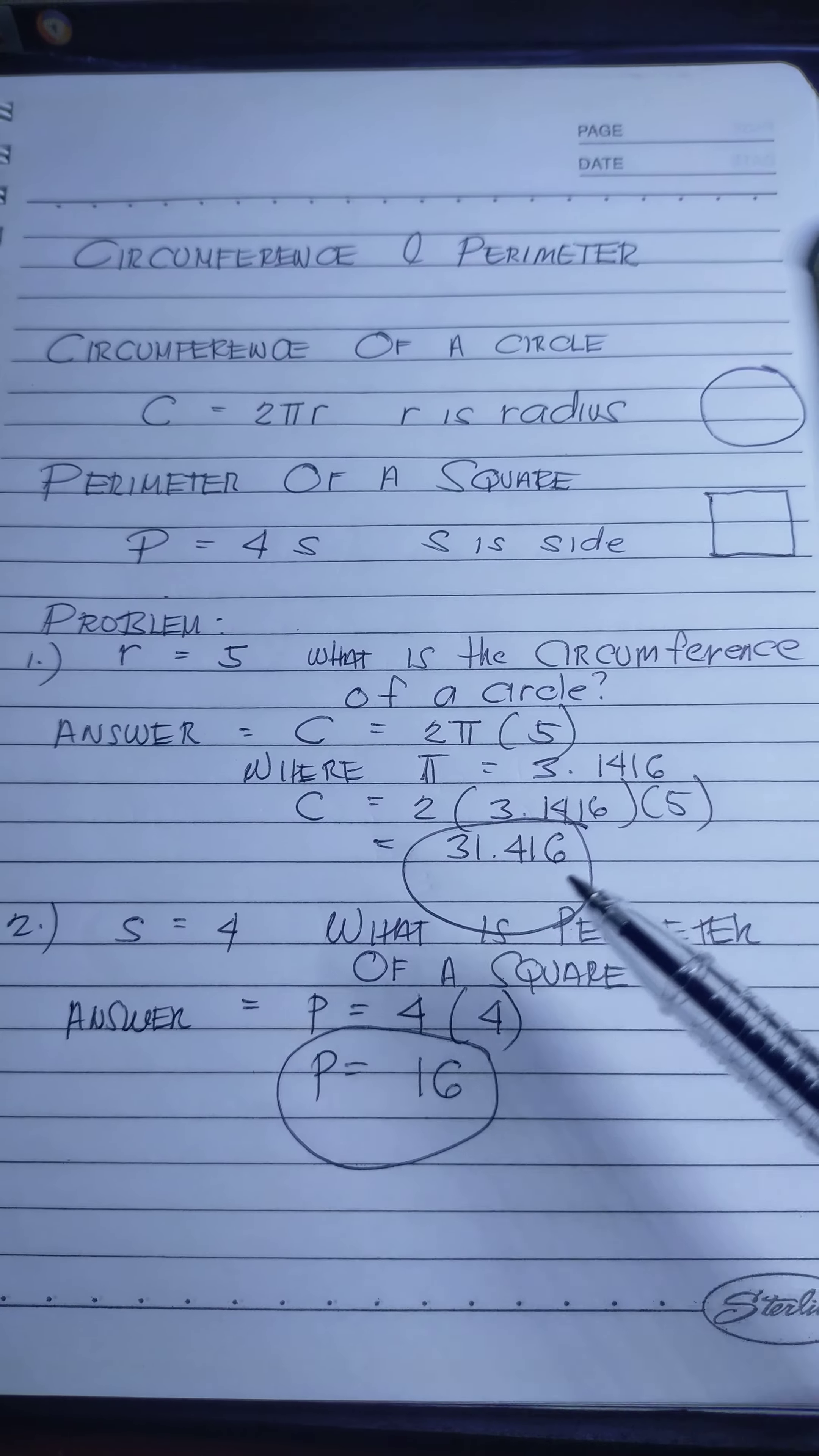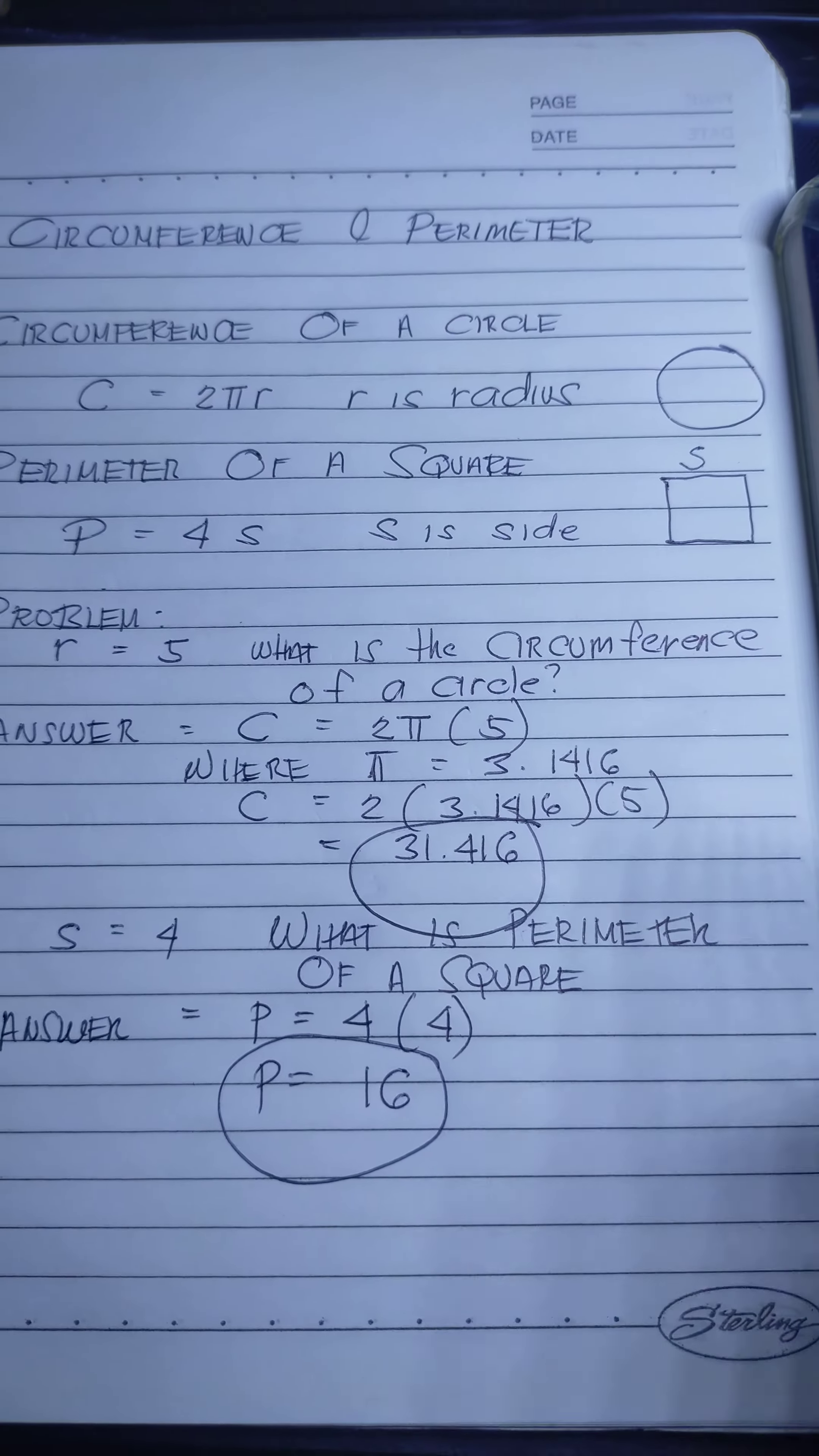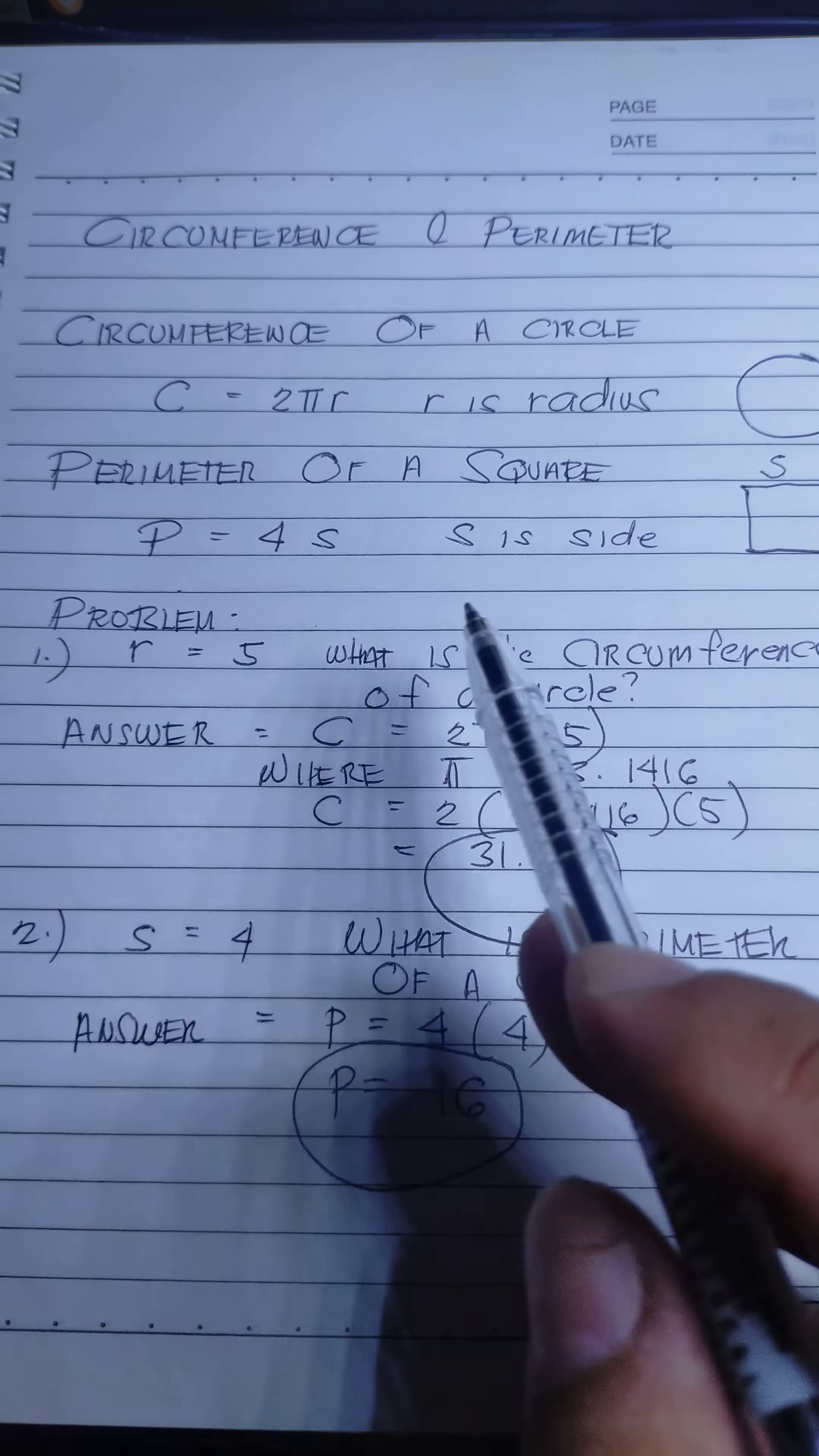The perimeter of a square. The formula is P = 4s, where s is the side. This is the side. We all know that squares have all the same sides, so we put 4s.